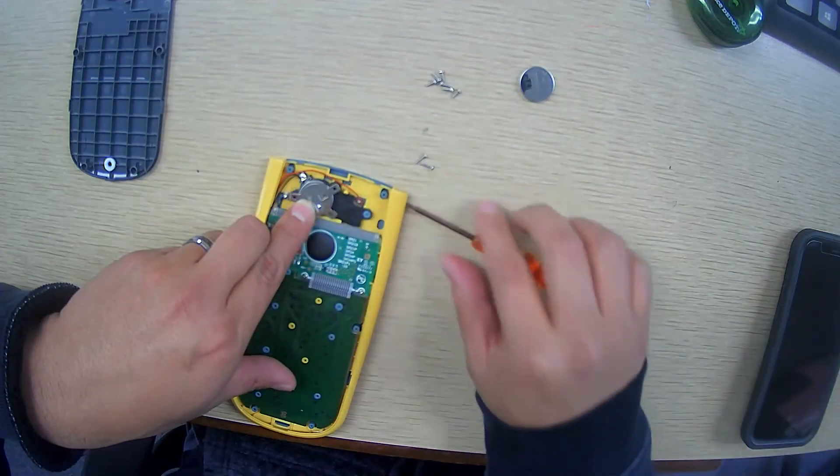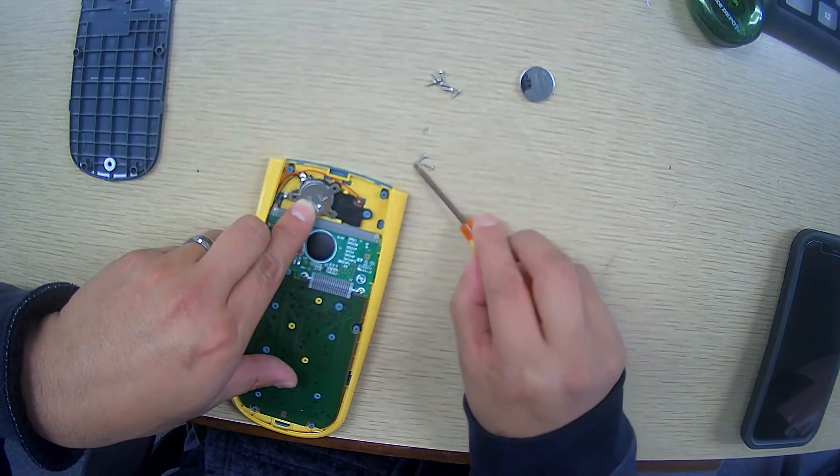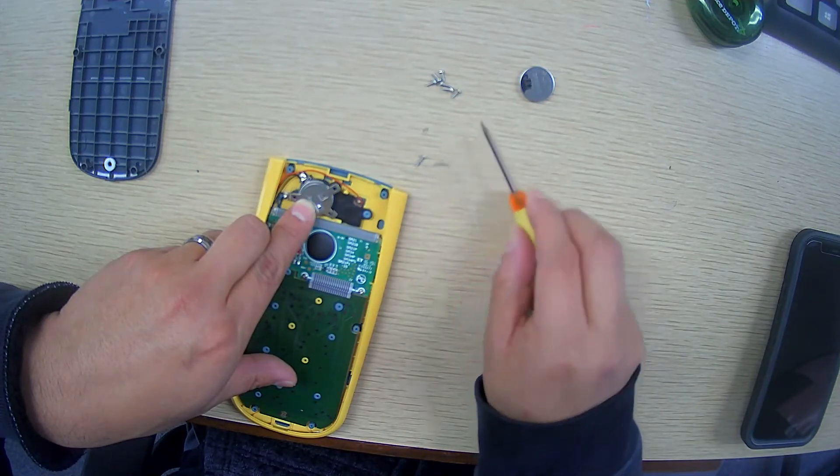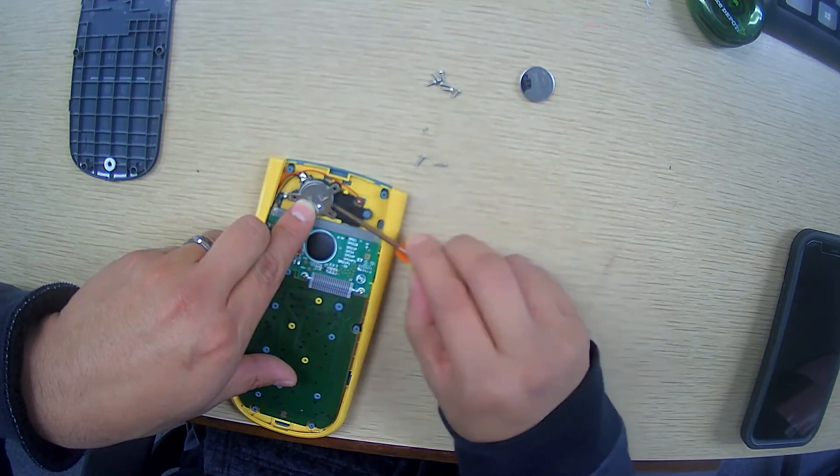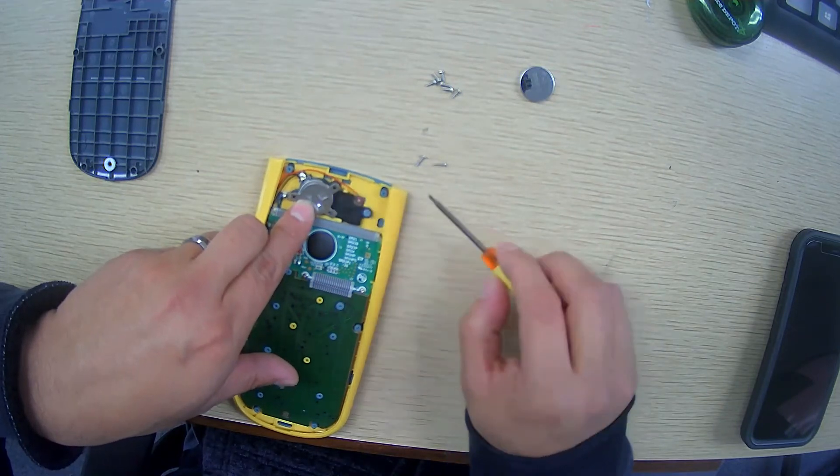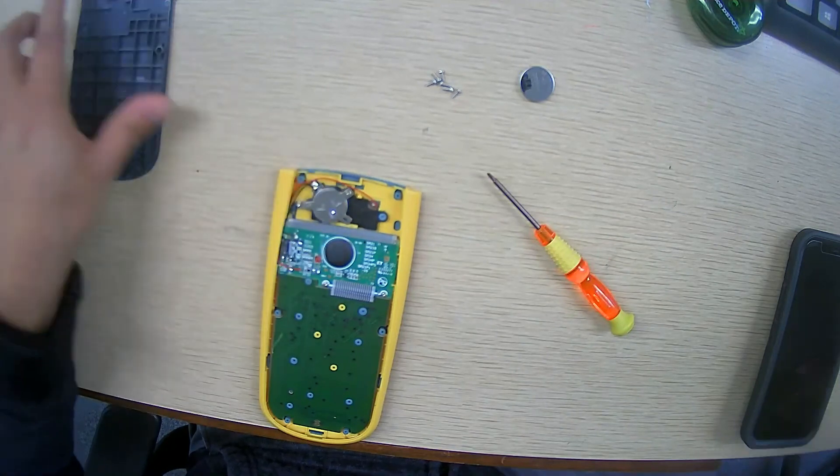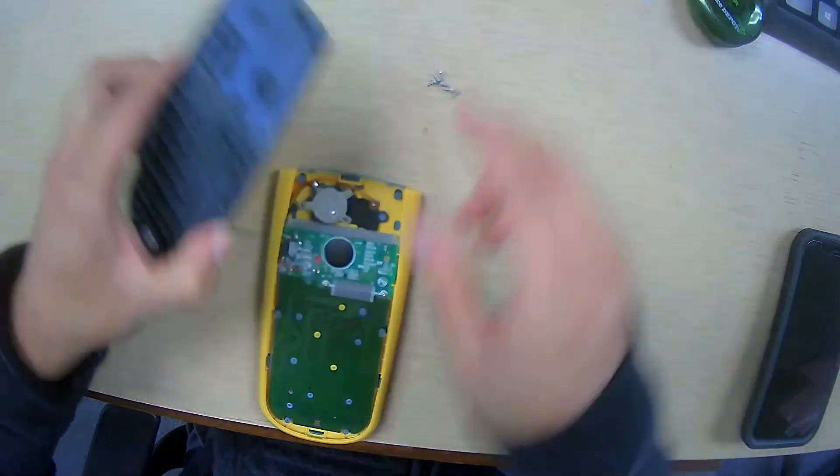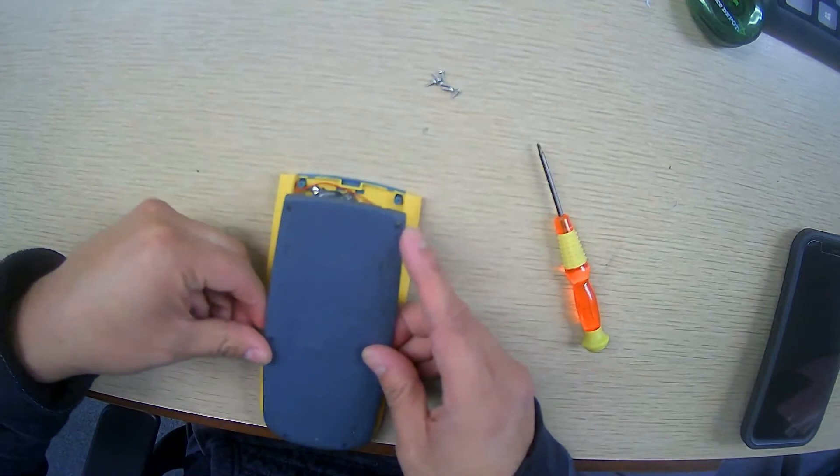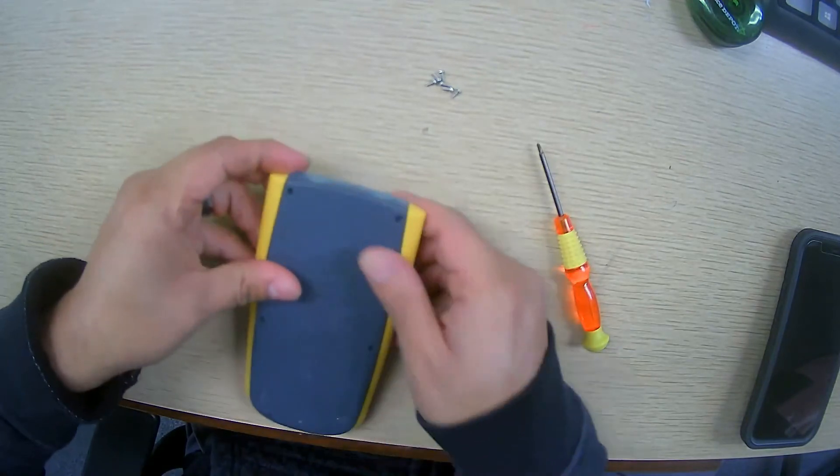All right, so as you put this back, make sure do not mix the screws, because these two screws are longer than the other six. So these two are longer, and I'm just going to put them back now. All right, so the two longer screws are already there, and now we are excited to close this one. See how easy it is?